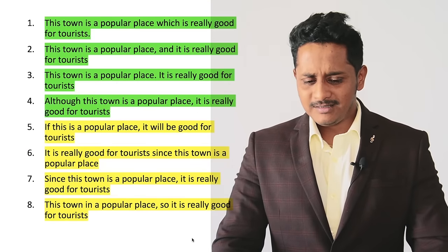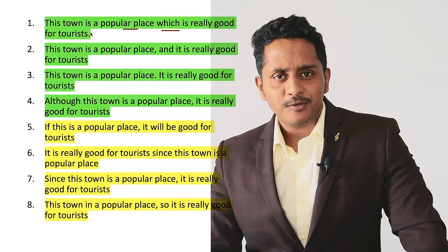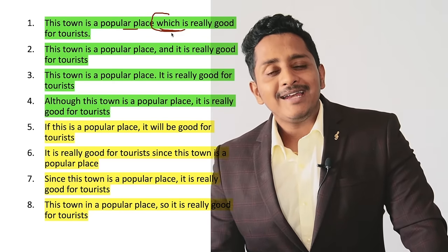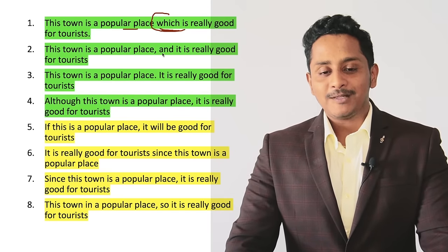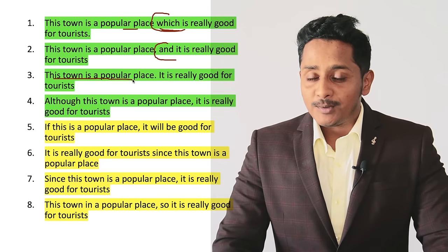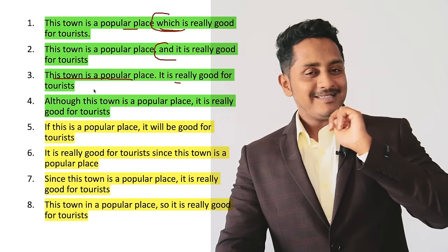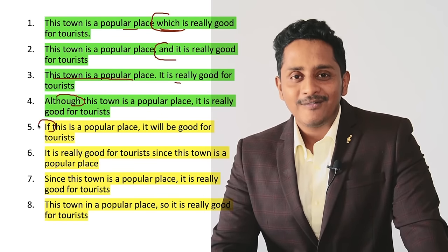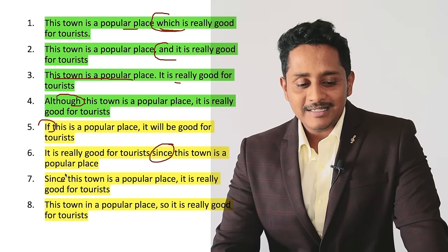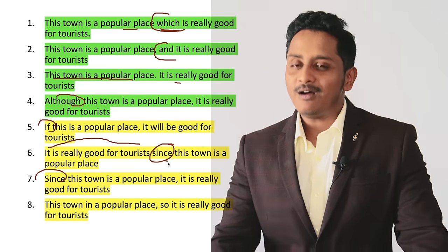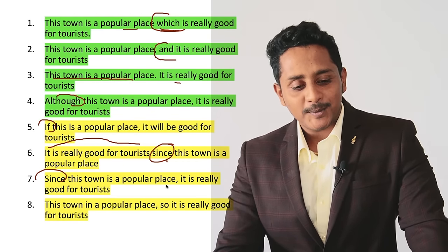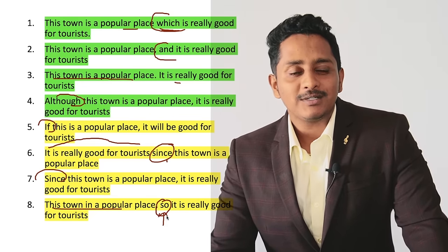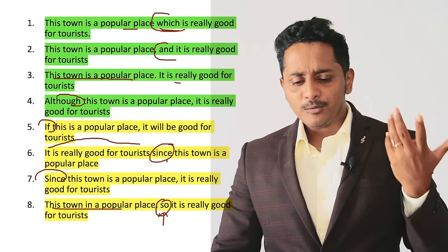Now let's take things step by step. People have problems writing compound and complex sentences with zero grammatical errors — that's what the next part is all about. 'This town is a popular place which is really good for tourists' — the word 'which' also creates a complex sentence. For compound: 'This town is a popular place AND it is really good for tourists.' Any of the FANBOYS makes it compound. So any of these sentence types is what we should be capable enough to write for a better score.